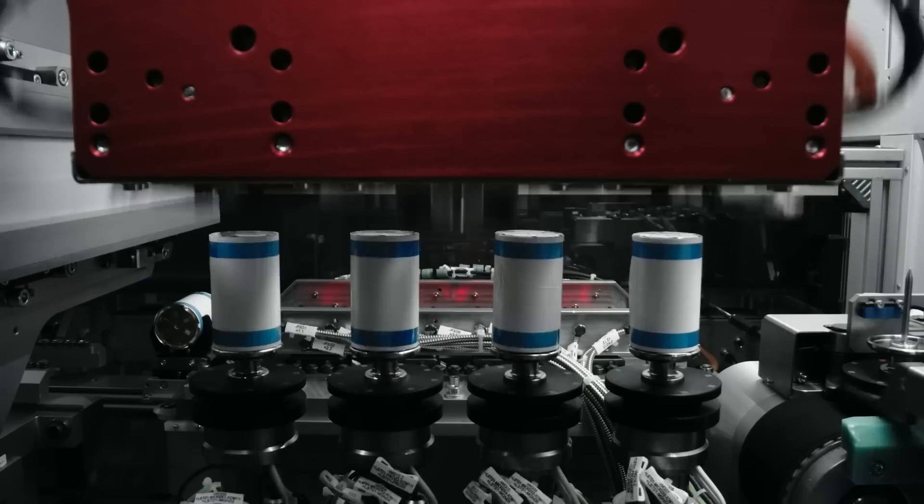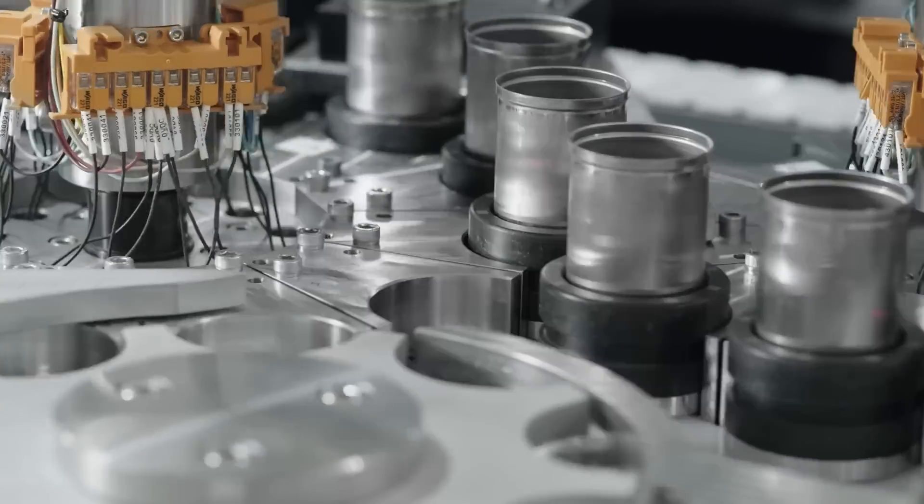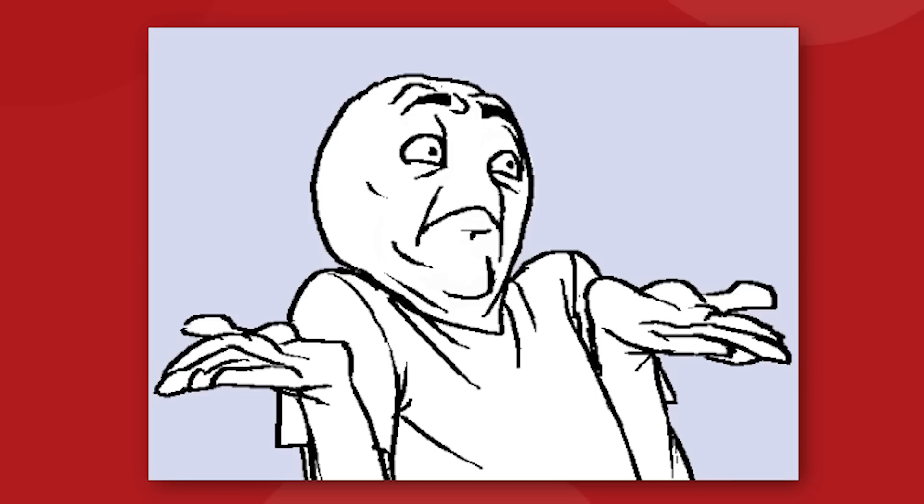We do now have two active 4680 cell production lines, the original pilot line in Fremont, California, and the new system that was installed at Giga Texas with the second generation of 4680 production machines. Tesla says that they have tripled 4680 cell production in Q3 versus Q2 numbers, though we do not know what any of those figures amount to.